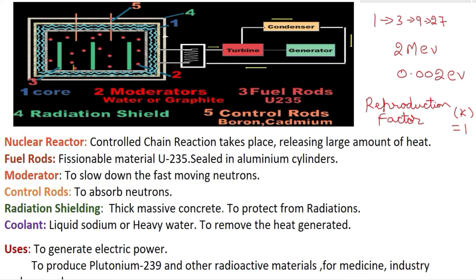There will be a neutron source somewhere near or inside the nuclear reactor. From this neutron source, neutrons will come out. These neutrons enter into the core of the nuclear reactor, and on their way they hit the uranium-235 nuclei present in the fuel rod and undergo nuclear fission reaction.